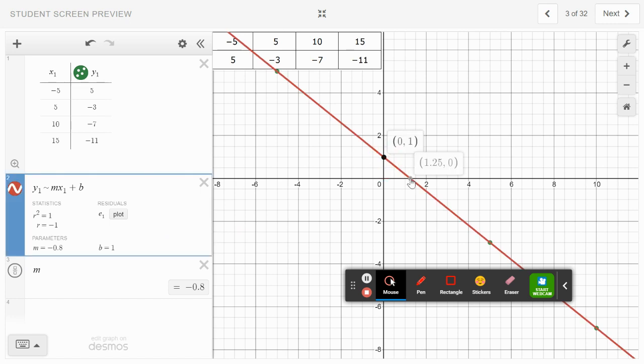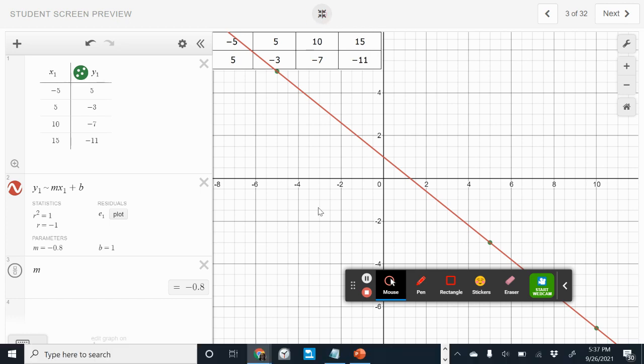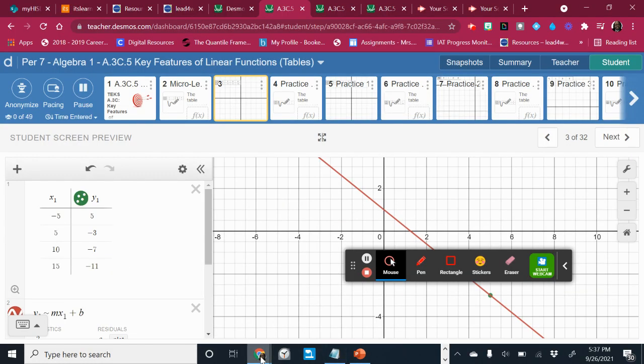The way we got our x-intercept, we just looked at where the line crosses the x-axis. This is our x-axis—our horizontal line—and notice they're all giving us points. That's it. I'm going to let you all do the rest on your own.